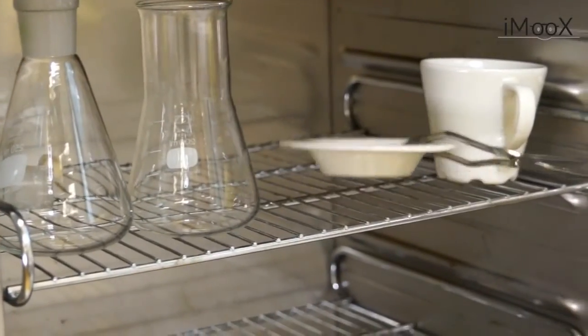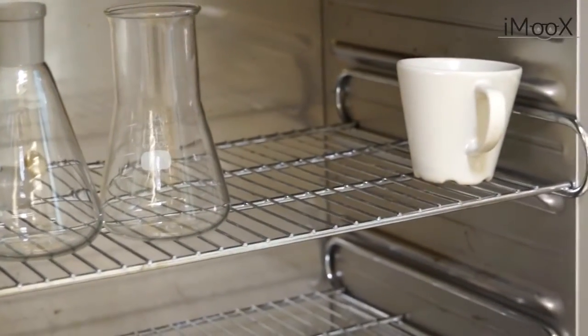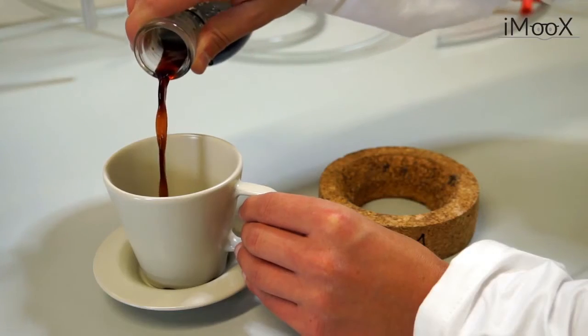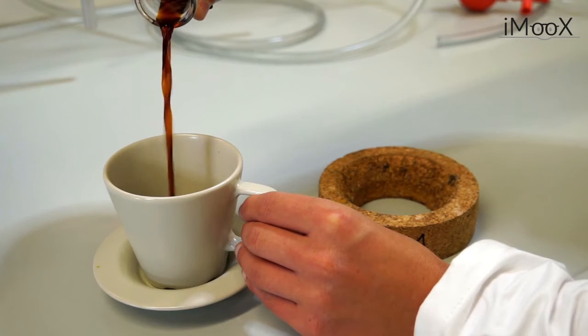Larissa uses the tongs and heat-proof gloves to get a saucer and a cup from the muffle furnace. She pours the coffee in the cup.